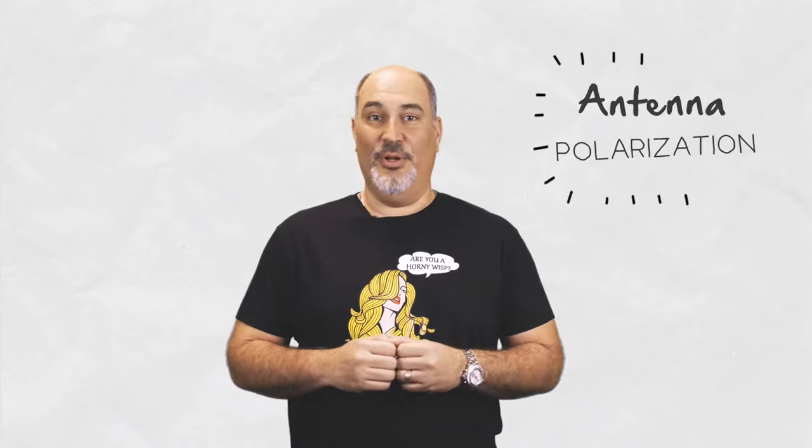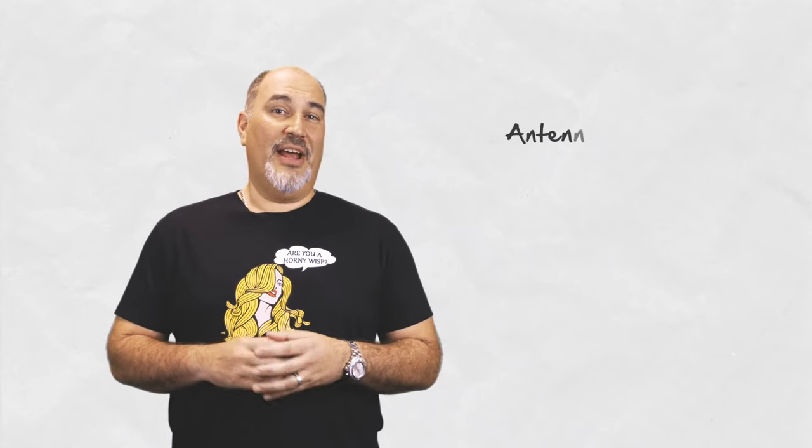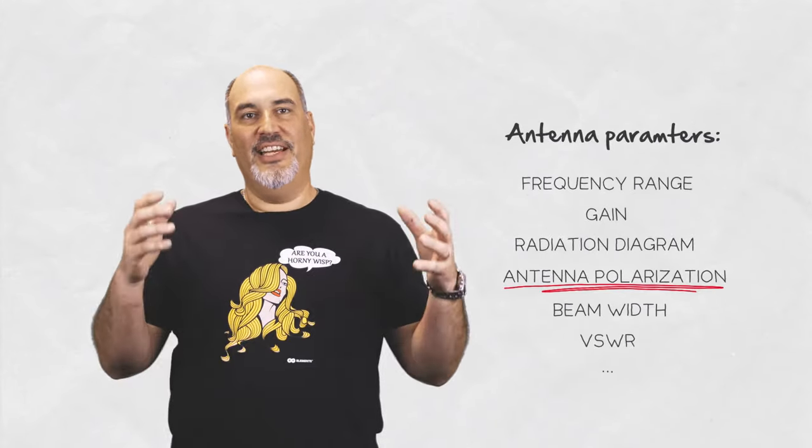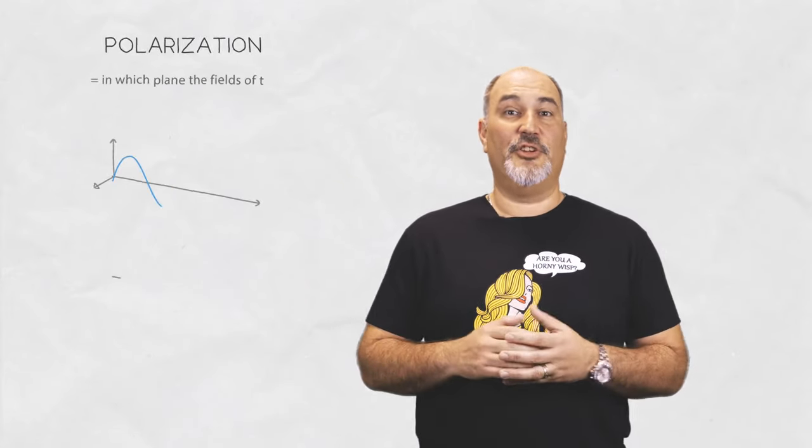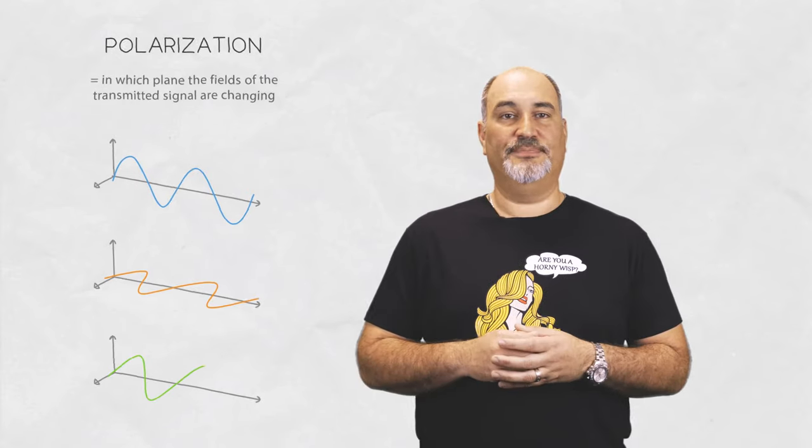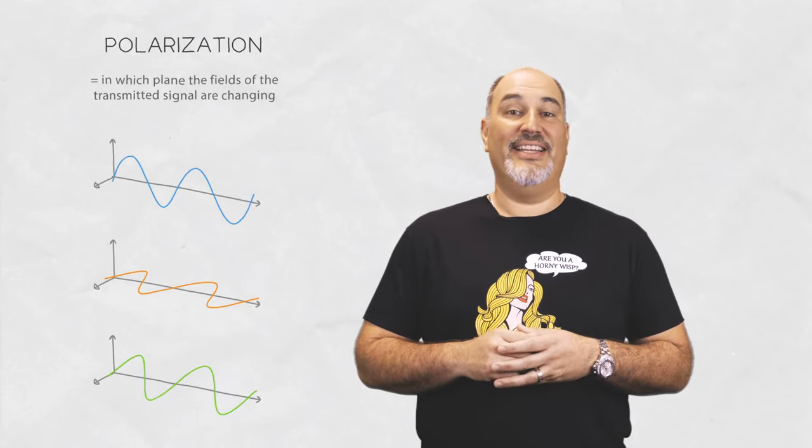Hey everybody, it's Tassos with RF Elements and today we're talking about antenna polarization. One of the most important parameters of an antenna is its polarization. It's a natural property of any antenna. Polarization dictates in which plane the field of the transmission signals are changing, and polarization is dictated by an antenna designer.